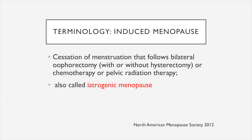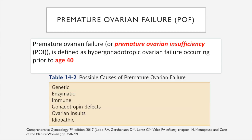Induced menopause, also called iatrogenic menopause, is a cessation of menstruation that follows bilateral oophorectomy with or without hysterectomy, chemotherapy, or pelvic radiation therapy. Premature ovarian failure, or POF, also called premature ovarian insufficiency or POI, is defined as hypergonadotropic ovarian failure occurring prior to the age of 40 years old. Possible causes include genetic, enzymatic, gonadotropin defects, ovarian insufficiency, idiopathic, and immune disorders. Immune disorders are the most common cause of premature ovarian failure.